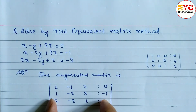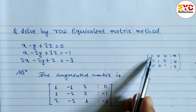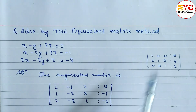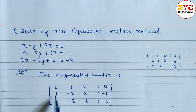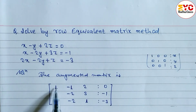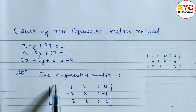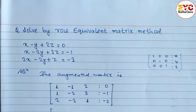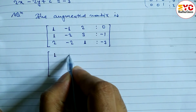We need to convert the augmented matrix into identity matrix form. We can see that the first row already has a leading 1. Now we need to convert the 1 in the second row and the 2 in the third row (in column 1) into 0. We use the row equivalent matrix method, which means we can only use row operations.